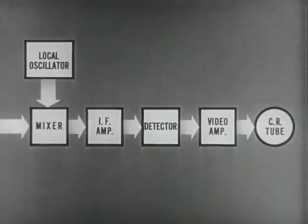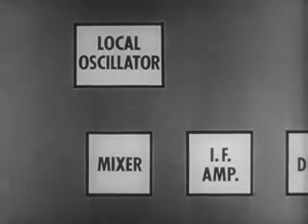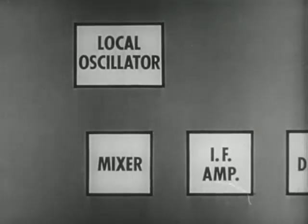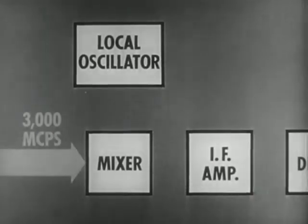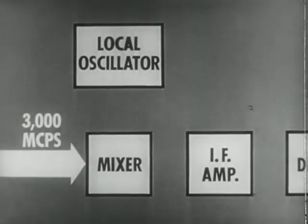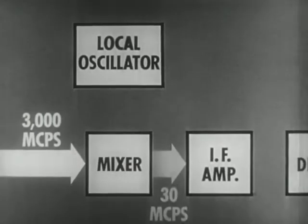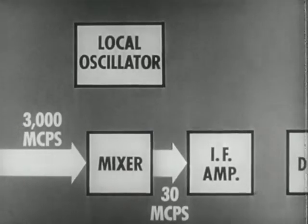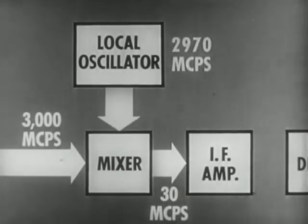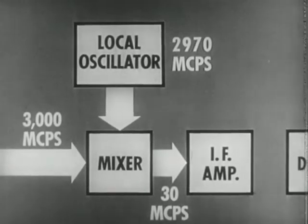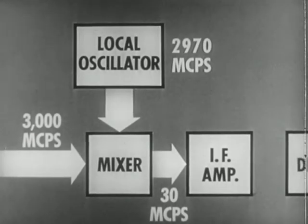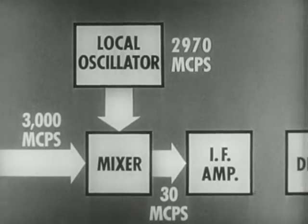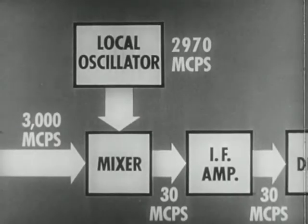Since the intermediate frequency is only a fraction of the incoming frequency, the local oscillator must operate at almost the same frequency as the transmitter. For instance, at 10 centimeters, or 3,000 megacycles per second, where the IF is usually 30 megacycles per second, the local oscillator must operate at 2,970 megacycles per second. And it must have very great frequency stability, since the IF amplifier is designed to pass only the one frequency.